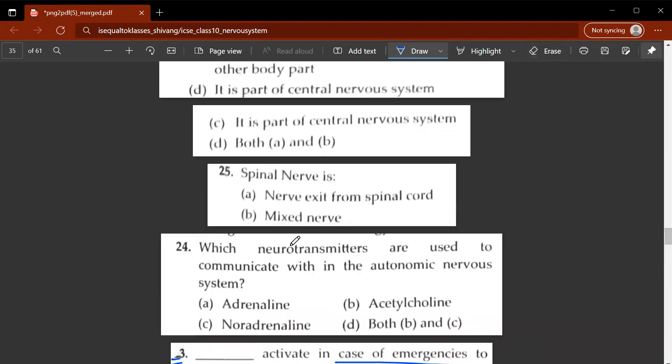24th question. Which neurotransmitters are used to communicate within the autonomic nervous system? So D. Both B and C is the correct answer. Now what is B and C? B is acetylcholine and C is noradrenaline. 25th question. Spinal nerve is? So spinal nerve is D. Both A and B. What is A and B? Nerve exit from spinal cord and mixed nerve. So both of these are correct.